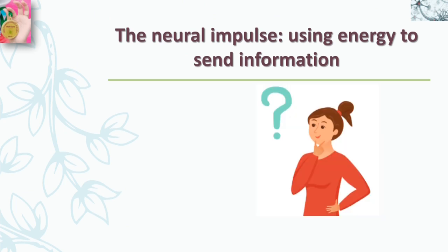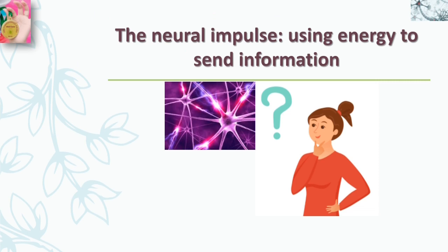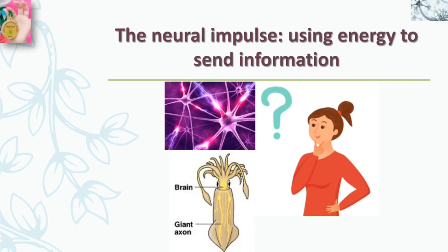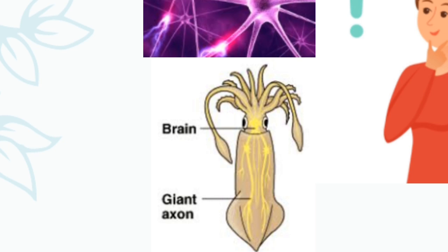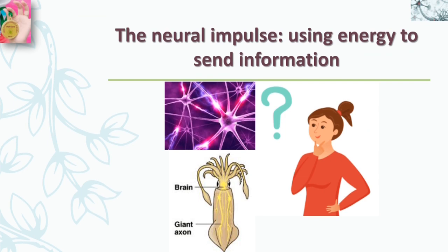Have you ever wondered what happens when a neuron is stimulated, and what is the nature of the signal — the neural impulse — that moves through the neuron? These were the questions that Alan Hodgkin and Andrew Huxley set out to answer in their groundbreaking experiment with axons removed from the squid. They chose squid axons because the squid has a pair of giant axons about a hundred times larger than those in humans, which made them only about as thick as a human hair. Their size permitted Hodgkin and Huxley to insert fine wires called micro-electrodes into them. By using micro-electrodes to record the electrical activity in the individual neuron, Hodgkin and Huxley revealed the mystery of the neural impulse.